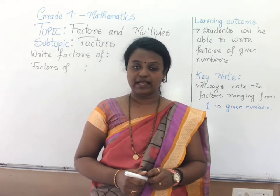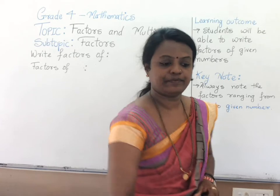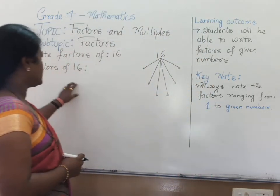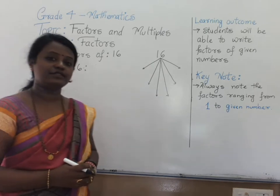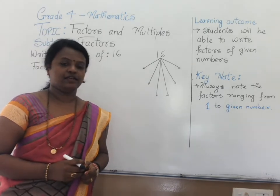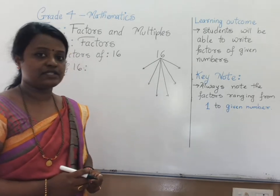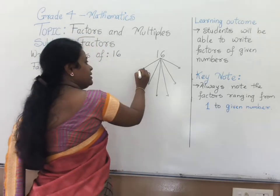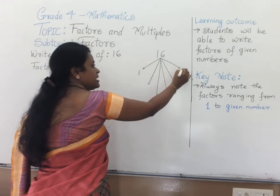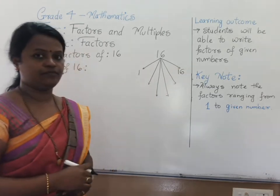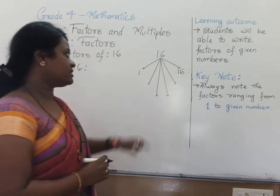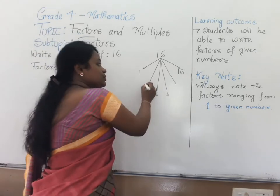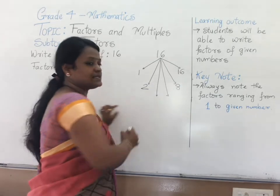So let us try with some examples. The question is to write factors of 16. Factors of 16 means you will note what are the divisors. That is 1 16s are 16. After 1 we have the digit 2.